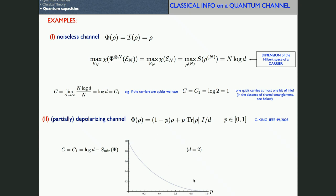Plotting the capacity as a function of the error probability p: as p goes to zero the capacity becomes log D — for a qubit, one bit per channel use. As p goes to one the capacity goes to zero, because every transmitted state is replaced by the completely mixed state. The capacity is a decreasing function of p.